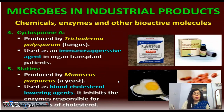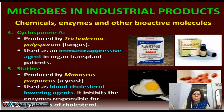Cyclosporin A, derived from the fungus Trichoderma polysporum, is used as an immunosuppressive agent in organ transplant patients. Statins, which are blood cholesterol-lowering agents, are produced by the yeast Monascus purpureus. Statins inhibit the enzymes responsible for the synthesis of cholesterol.